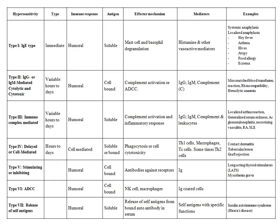This is a heavily loaded slide — a table I made because there was a question in the DNB Microbiology examination to explain the characteristics of hypersensitivity in tabular form. The table covers characteristics such as whether it is immediate or delayed, whether it involves humoral or cell-mediated immunity, the nature of the antigen, effector mechanisms, and mediators involved.